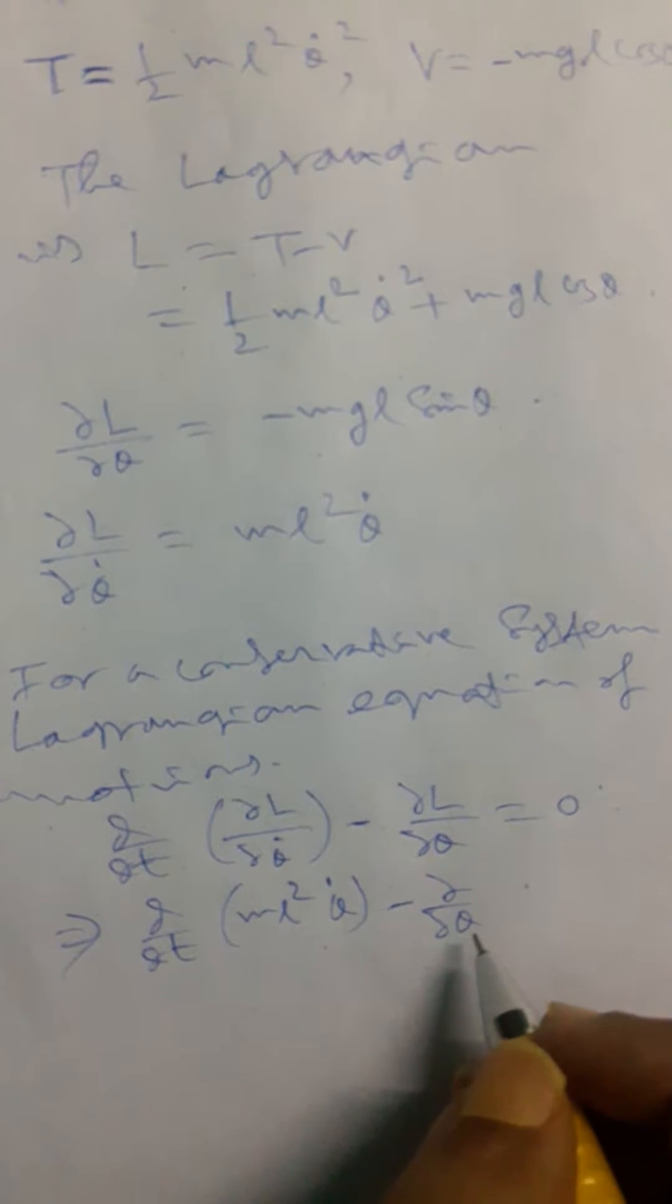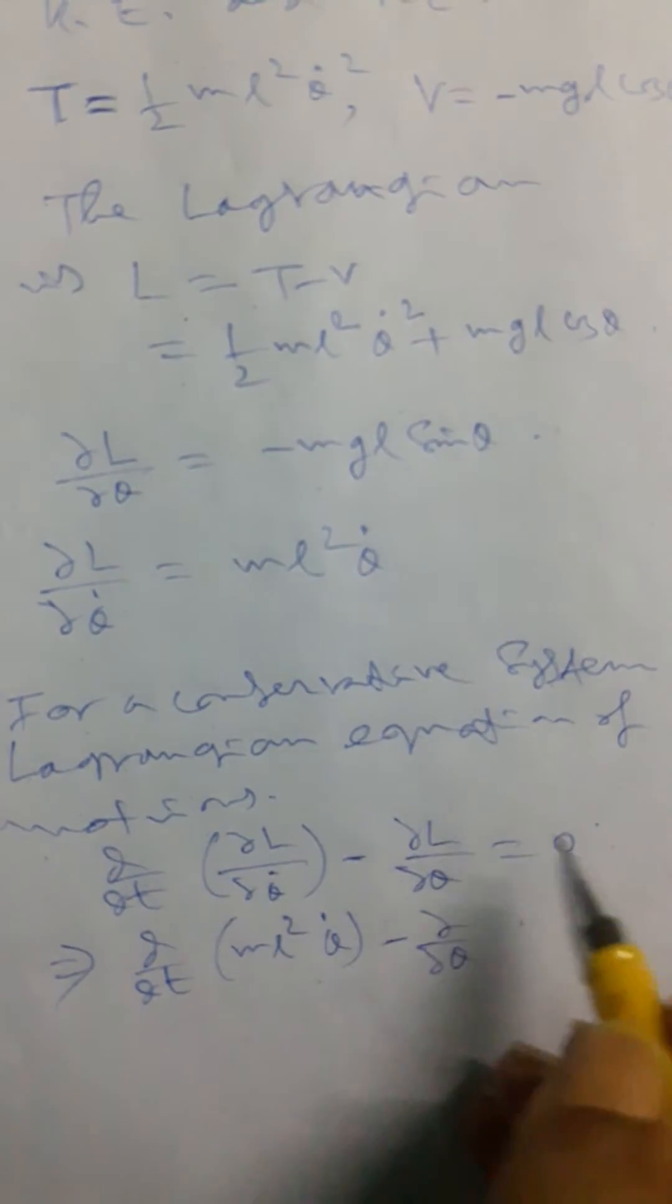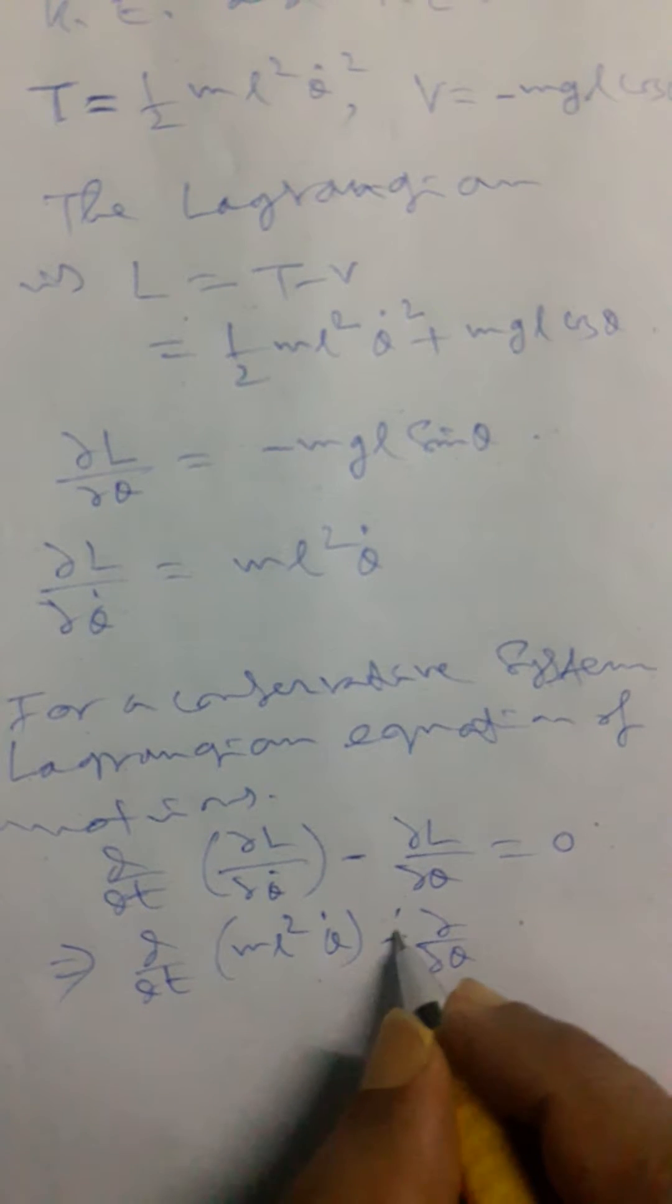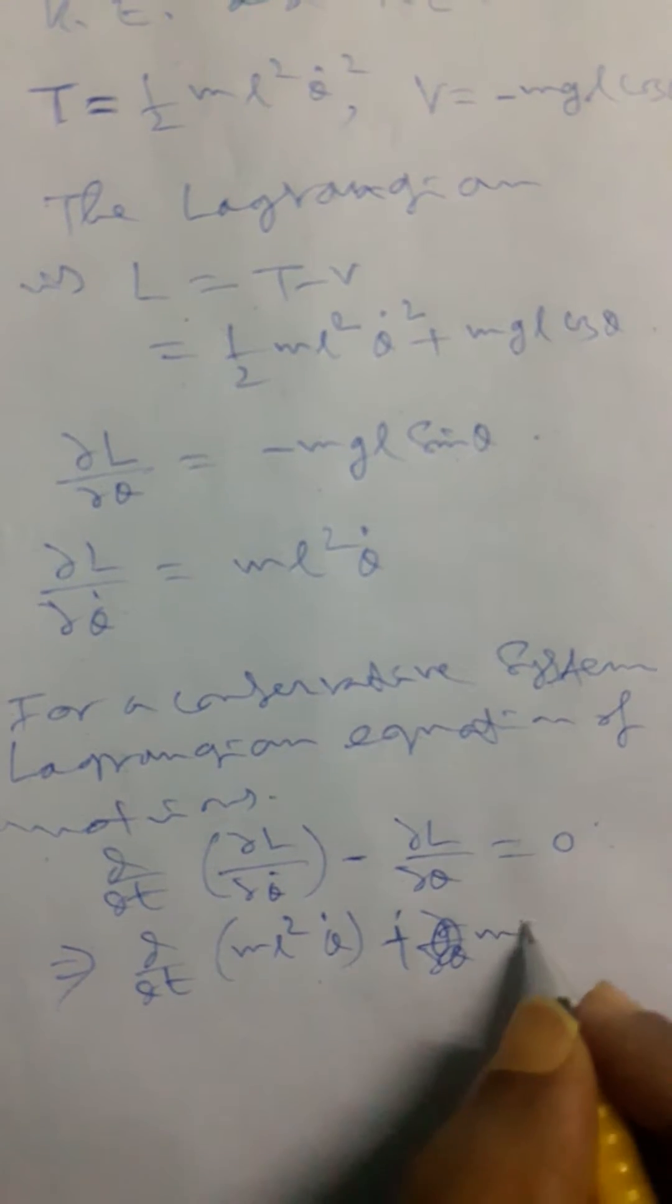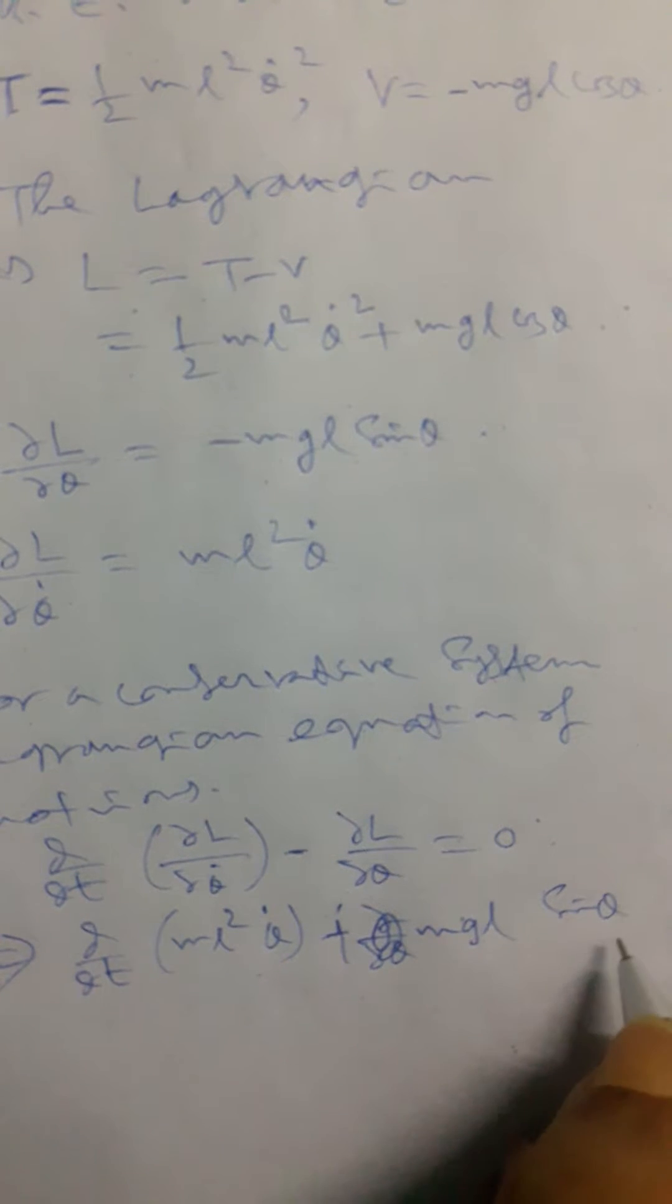The time derivative d/dt(∂L/∂θ̇), that will be given here, minus ∂L/∂θ which is -MgL sin θ, so it will be plus MgL sin θ equals zero.